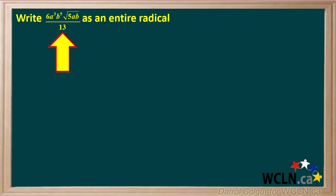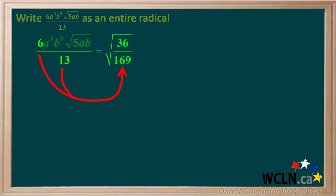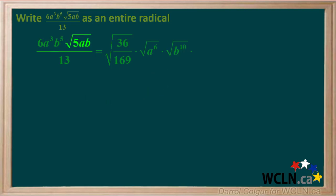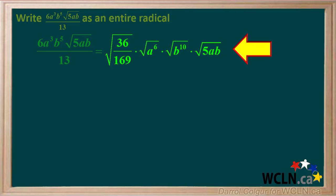We're asked to write this mixed radical as an entire radical. 6 squared is 36 and 13 squared is 169, so 6 over 13 is the same as the square root of 36 over 169. a cubed can be written as the square root of a to the 6th. b to the 5th can be written as the square root of b to the 10th. The square root of 5ab is already a radical, so it can be written here as is.